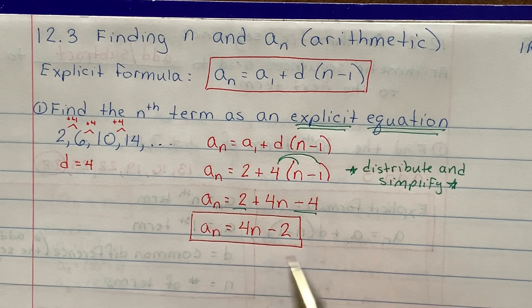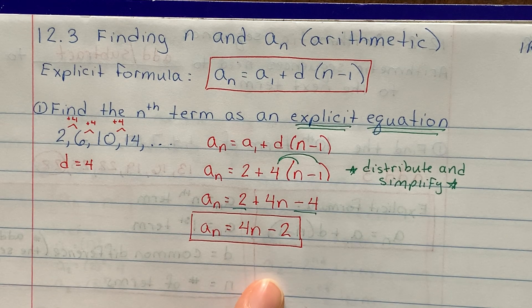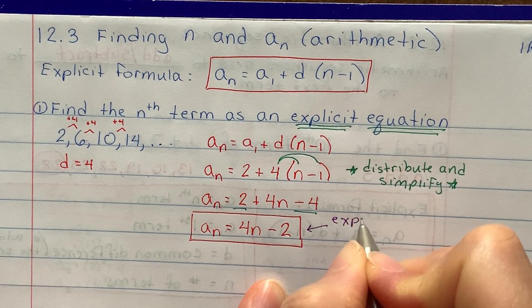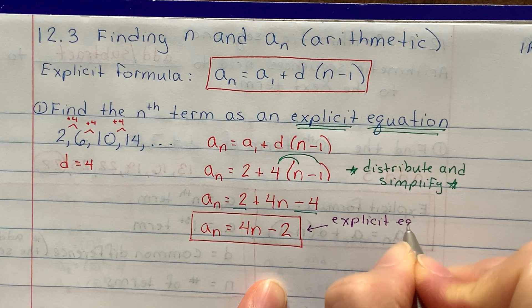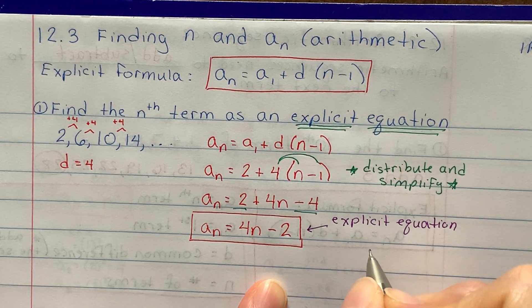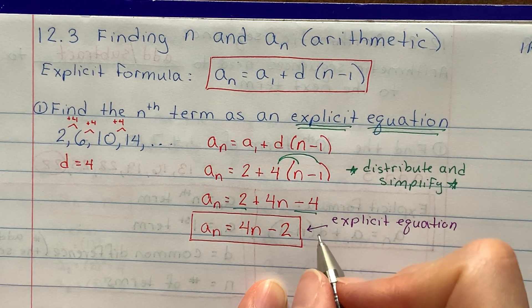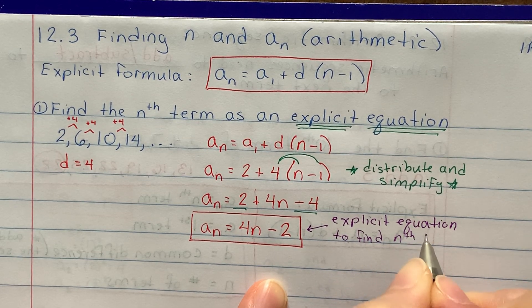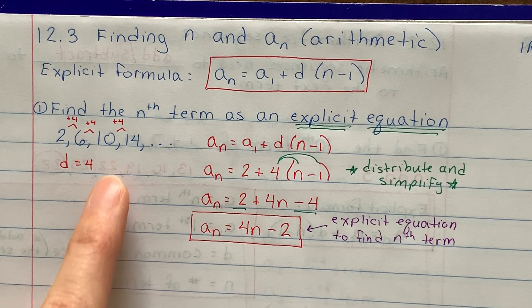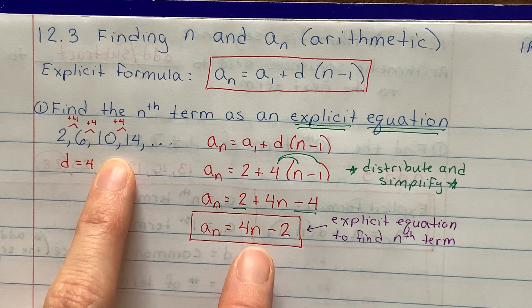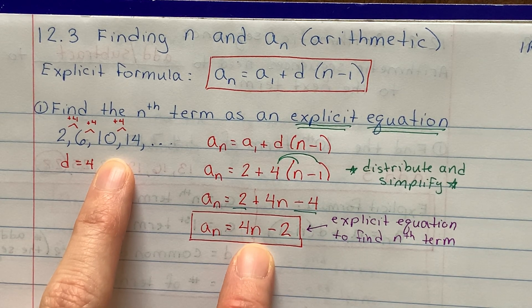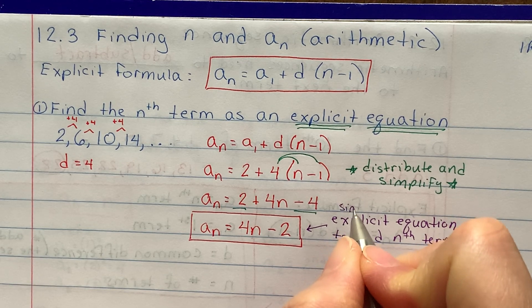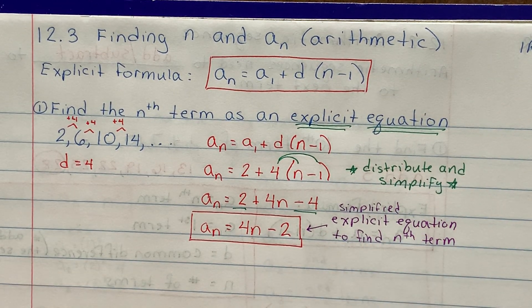If you wrote negative 2 in front, that's okay — I just like to put it at the end. We just figured out the explicit equation. The explicit equation is what I would use to find the nth term. So if I asked you what's the 1,000th term in this sequence, all I would do is plug in 1,000 in place of n and solve for the 1,000th term. This is the simplified explicit equation to find the nth term.